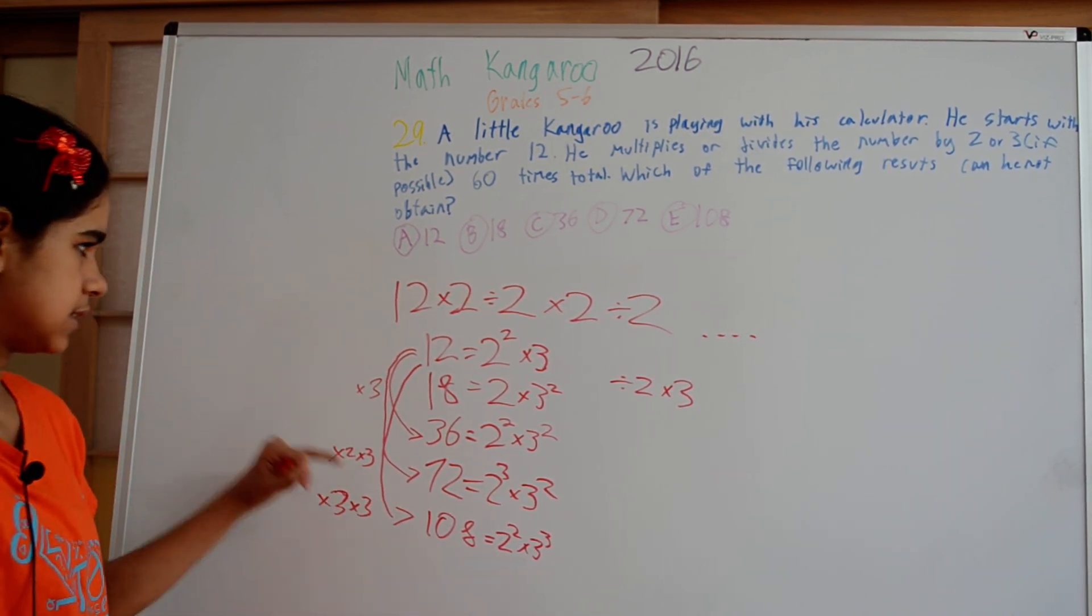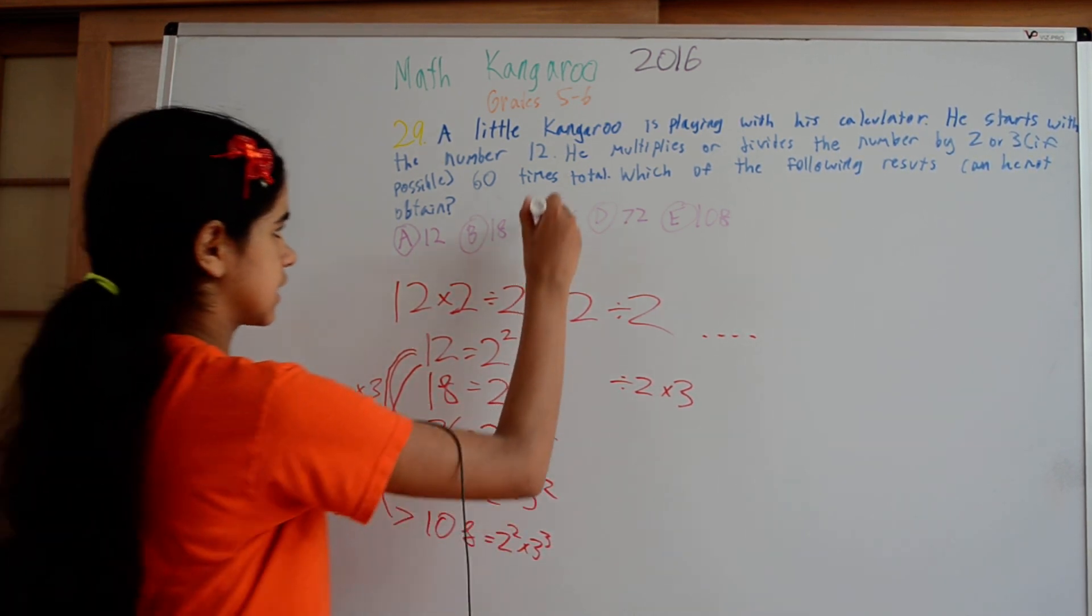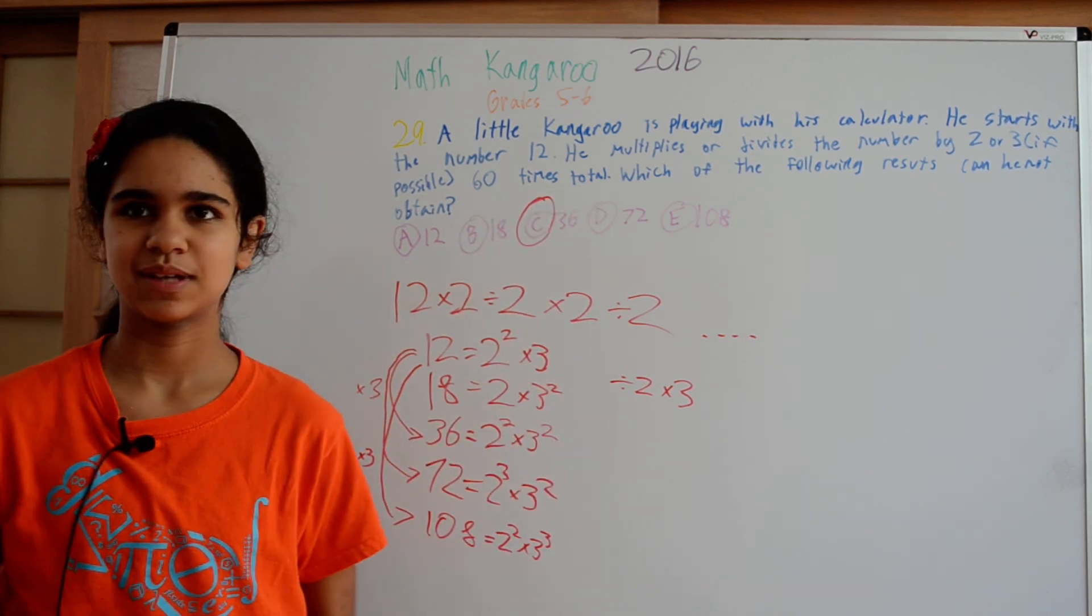So that's 2 steps, that's 2 steps, and going to 18 is 2 steps. 36 is only 1 step, so we can't do that. Thank you.